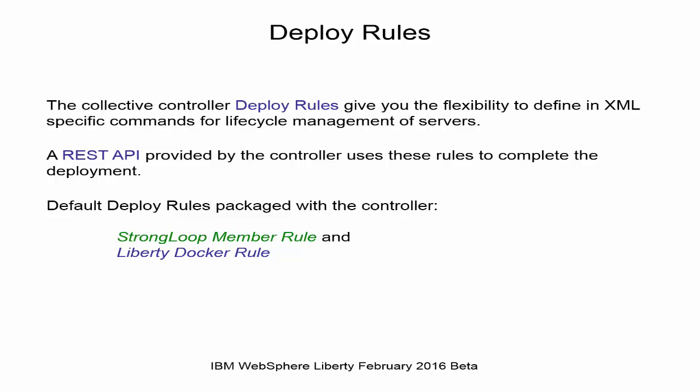Deploy rules are used by the collective controller to drive the deployment of StrongLoop servers and Liberty Docker containers through a REST API. The controller provides two default deploy rules, one for StrongLoop and one for Docker.